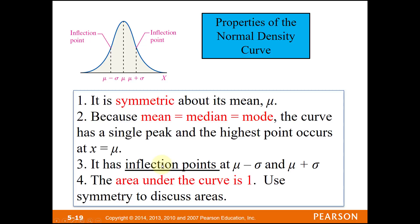Concavity: the middle portion of the normal curve is concave down (like an upside-down U), and the ends are concave up. Where the curve changes concavity is called an inflection point. For the normal distribution, the inflection points — where concavity changes — always occur at exactly plus and minus one standard deviation from the mean. In homework problems, you'll be asked to identify the standard deviation by noticing where the inflection point is.